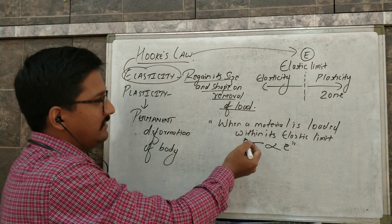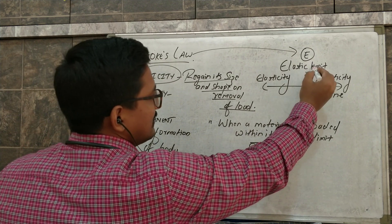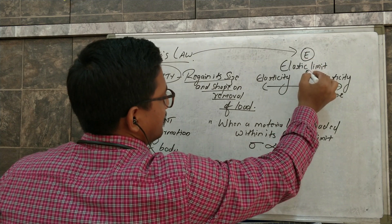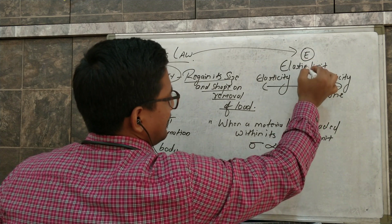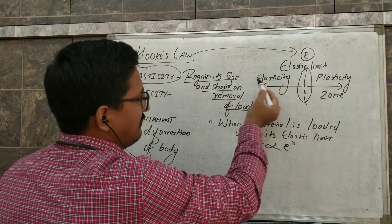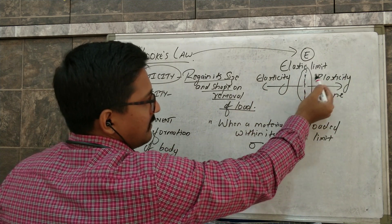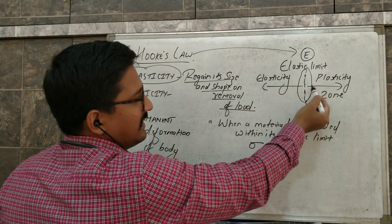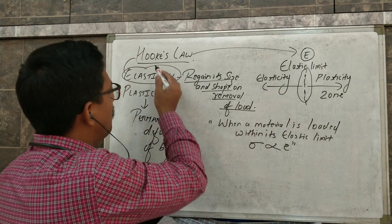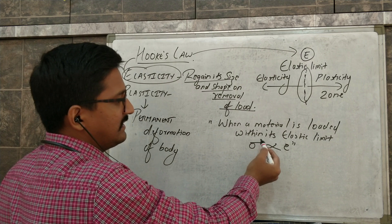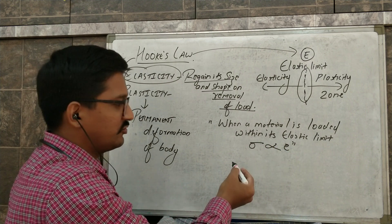So what does this imply? This implies that when a material is loaded up till this point, up till this limit, there will be elastic property in the body and if we cross this limit there will be a plastic zone, means material cannot regain its original size and shape. So our Hooke's law states that when a material is loaded within its elastic limit, stress is directly proportional to strain.